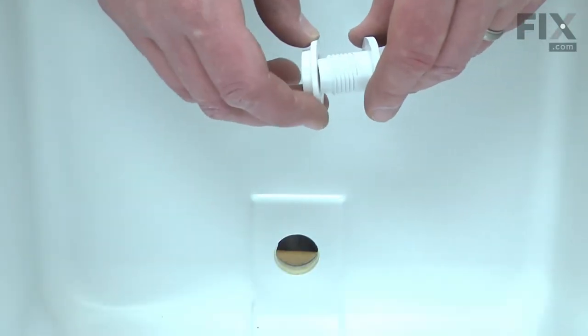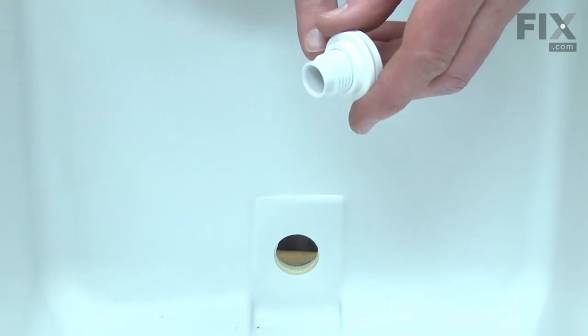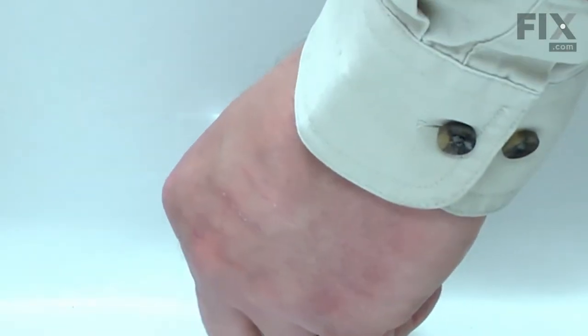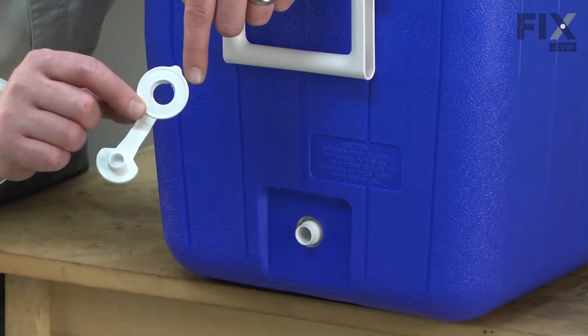Now install the grommet onto the spout. I want to make sure that I have the flange pointed towards the long part of the spout, and then this assembly gets installed into the cooler. Now I can install the nut and cap assembly.